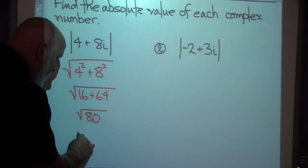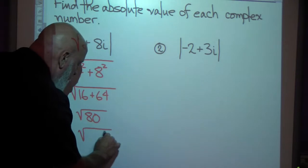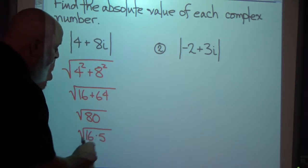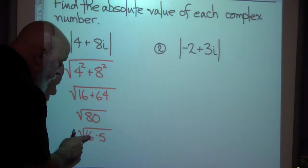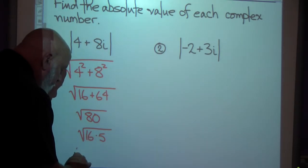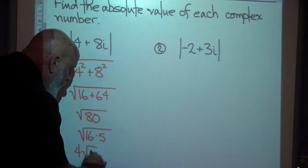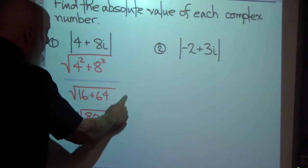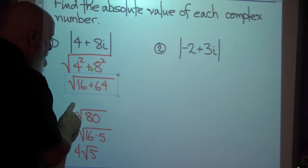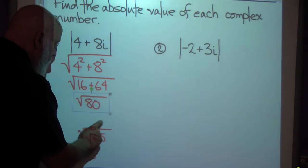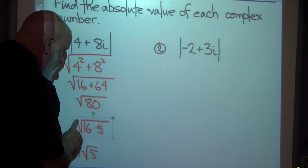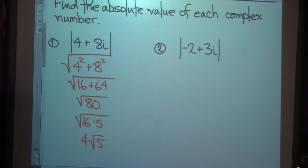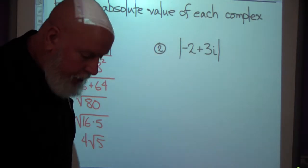Here's what the calculator is doing: it finds a perfect square inside. That's 16 times 5, and 16 times 5 is 80. It takes the square root of 16, which comes out as 4, leaving radical 5 under the radical. Your TI-30XS will simplify it from the square root of 80 to 4 radical 5 for you.